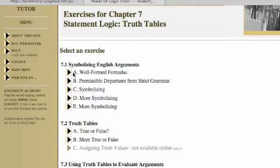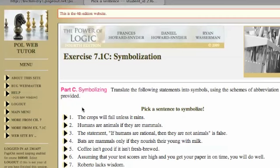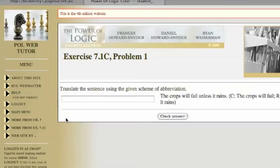I'm going to go into Chapter 7 here where we are first dealing with symbolizing and pull up a problem for us here. This says the crops will fail unless it rains.